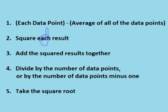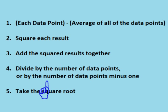So again, we take each data point and subtract from it the mean or average of all the data points. We square each answer, then we add all of the squared answers together. We then divide the total by the number of data points, or the number of data points minus 1, to get an average squared distance from the mean — also known as the variance. We take the square root of that to get the standard deviation.